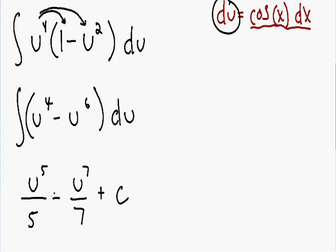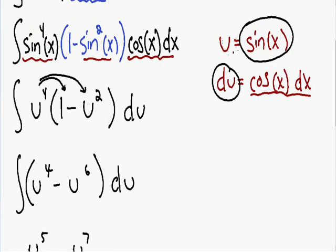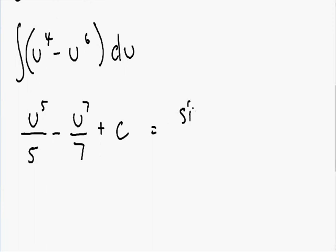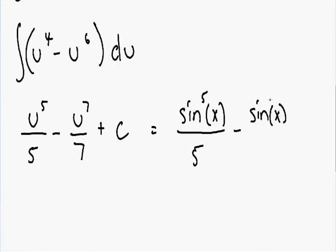Our final answer should always be in terms of x, not in terms of u. So let's plug everything back in. Our u equals sine of x, so instead of u to the 5th it's sine of x to the 5th, divided by 5. And instead of u to the 7th, we have sine of x to the 7th, divided by 7. And we can't forget our constant plus c. This is our final answer.